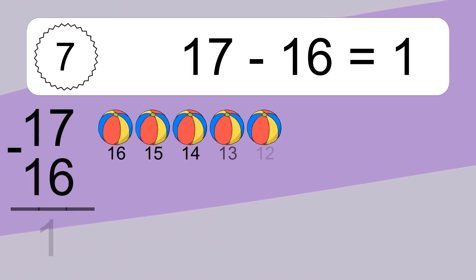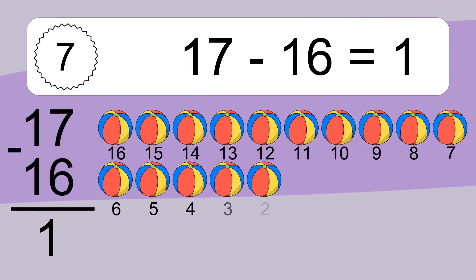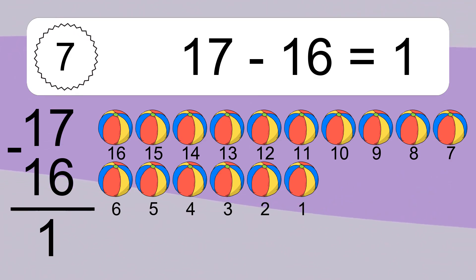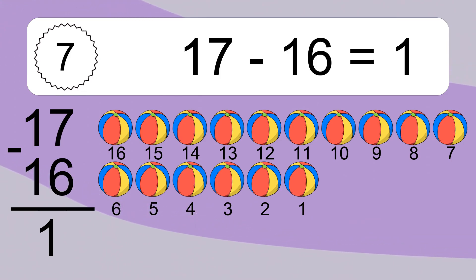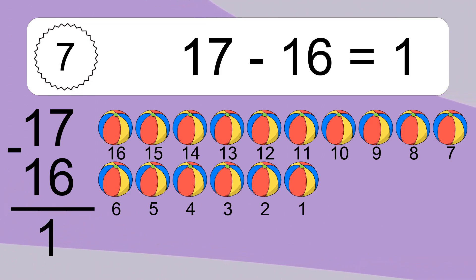17 minus 16 equals what? 17 minus 16 equals 1. Let's count it. 16, 15, 14, 13, 12, 11, 10, 9, 8, 7, 6, 5, 4, 3, 2, 1.